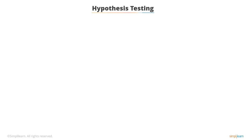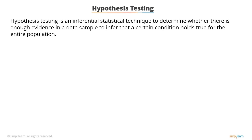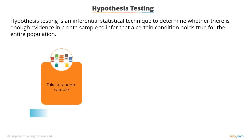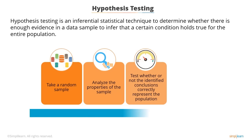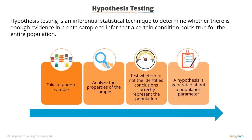So far, you have learned about descriptive statistics. Let's now learn about inferential statistics. Hypothesis testing is an inferential statistical technique to determine whether there is enough evidence in a data sample to infer that a certain condition holds true for the entire population. To understand the characteristics of the general population, we take a random sample, analyze its properties, and then test whether the identified conclusions correctly represent the population as a whole. The purpose of hypothesis testing is to choose between two competing hypotheses about the value of a population parameter.